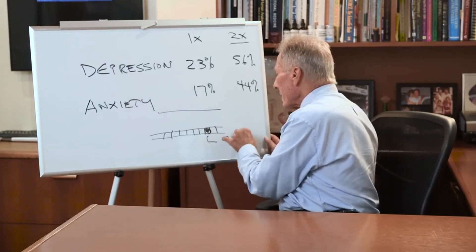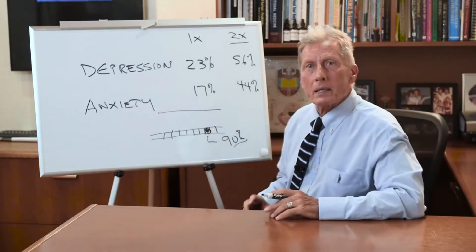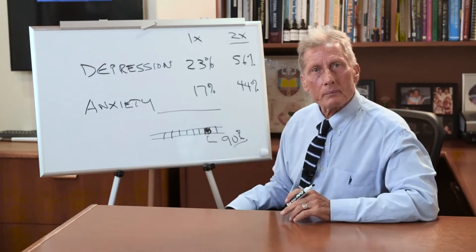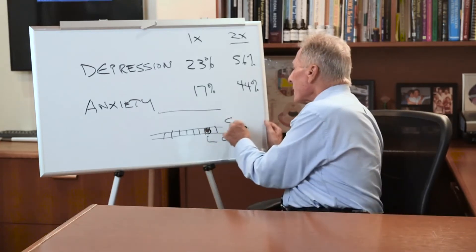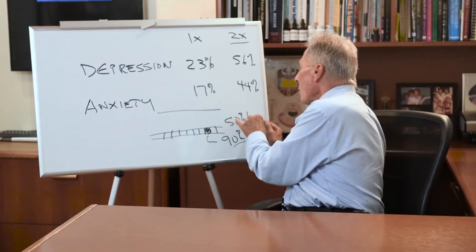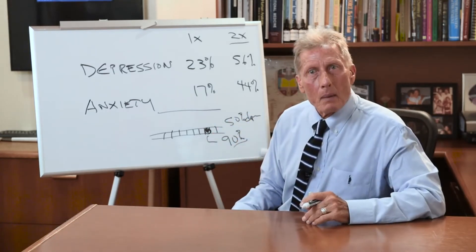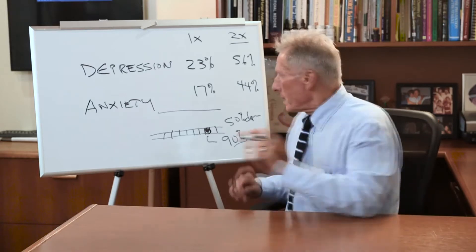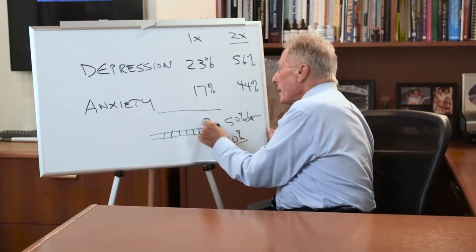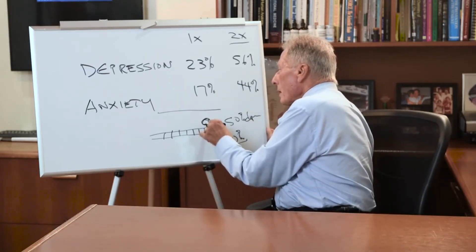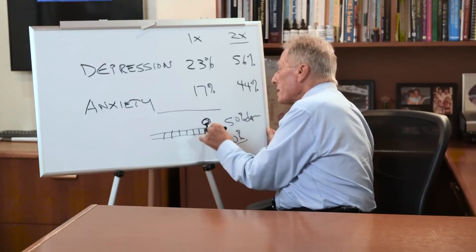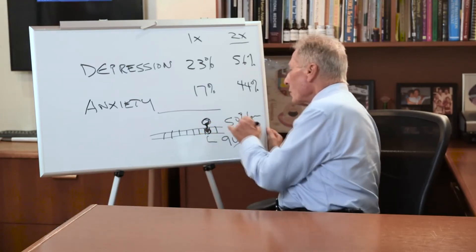90% of the serotonin that's made in the body is made by that cell. 50% of the dopamine is made in that cell. But that cell only makes it if the right bacteria is here that gives it something that it needs so it can do that.